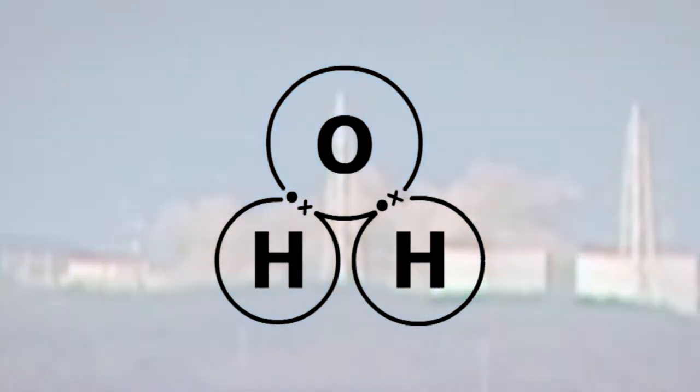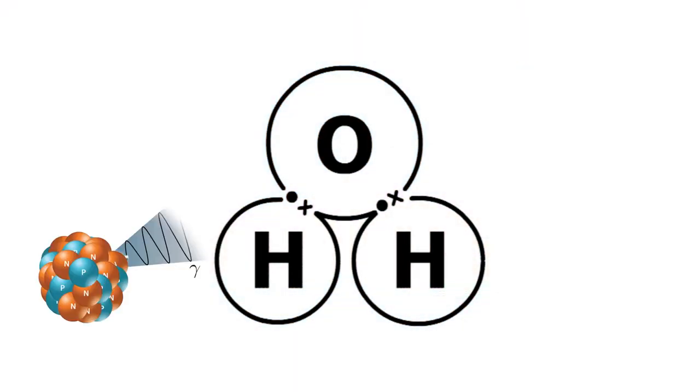The oxygen has a covalent bond with two hydrogens. A gamma or a neutron can knock the hydrogens clean off.